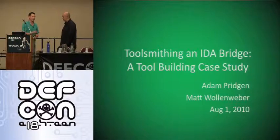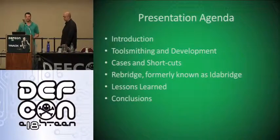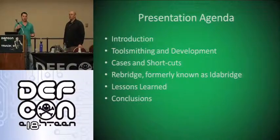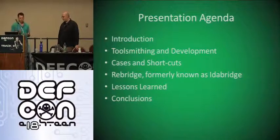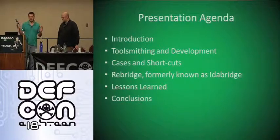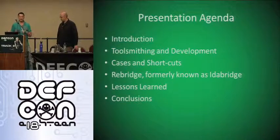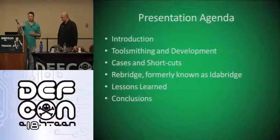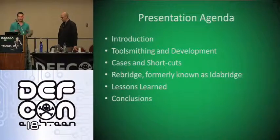My name is Adam Pridgen and this is Matthew Wollenweber. As a brief introduction, we're going to give an introduction to what we're talking about, a little background on toolsmithing, then discuss the development process we use. We'll talk about cases and shortcuts, then RE Bridge — an evolutionary project that came from a random idea. We'll follow up with lessons learned, conclusions, and special thanks.